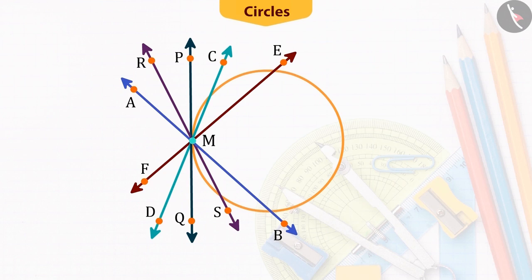You can see that all the lines intersect the circle at a point other than point M. So, all these lines are the secant lines of the circle.